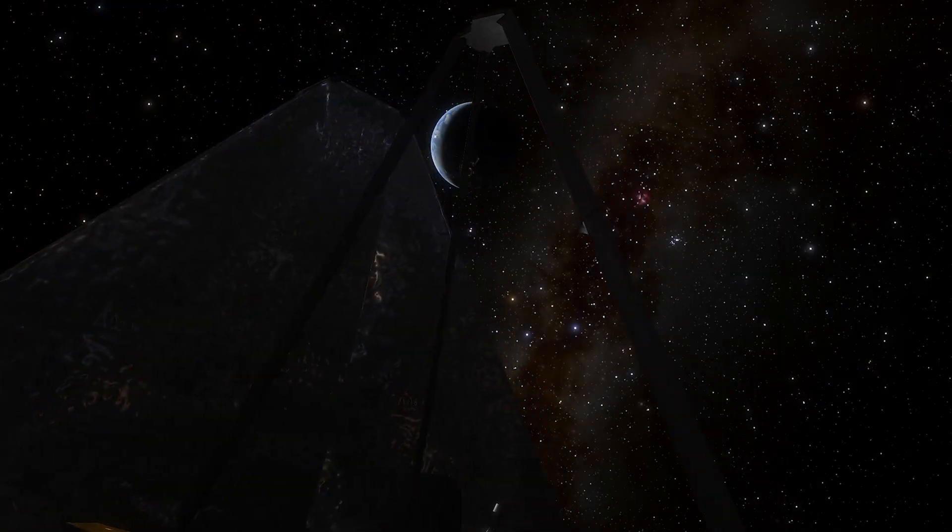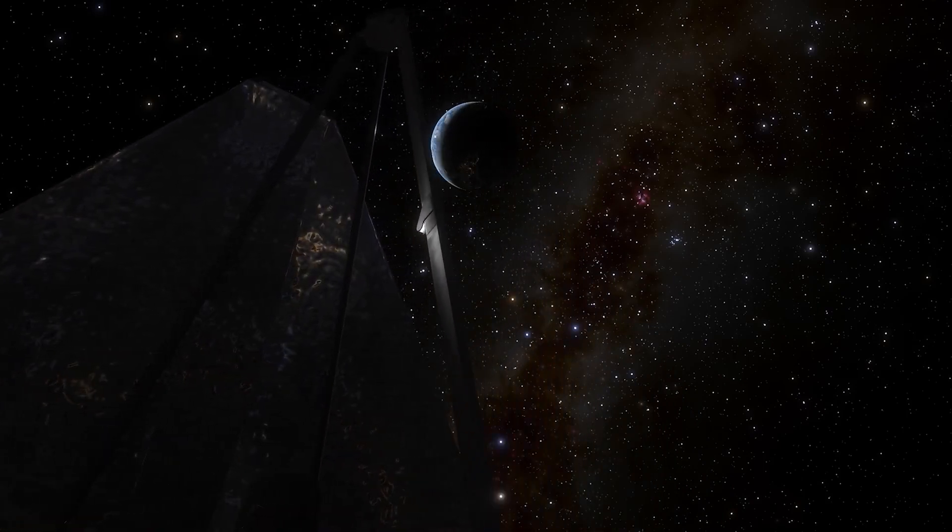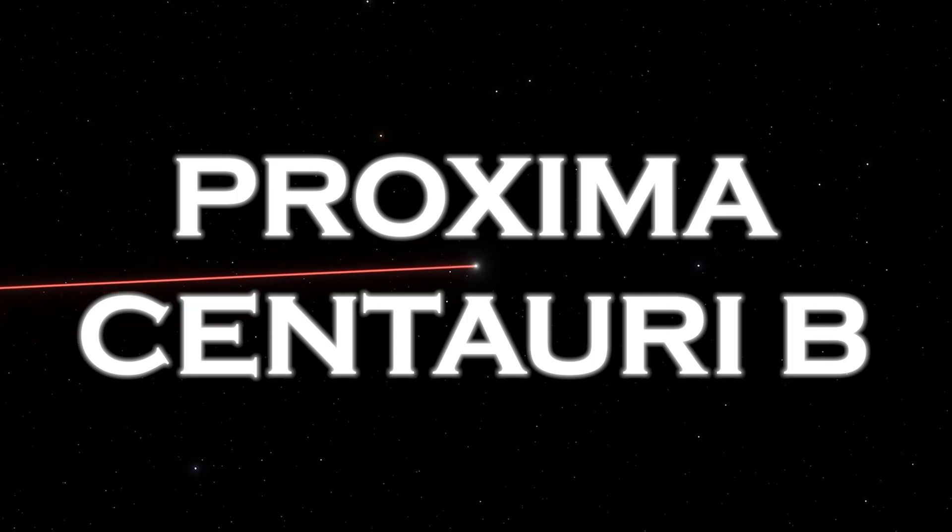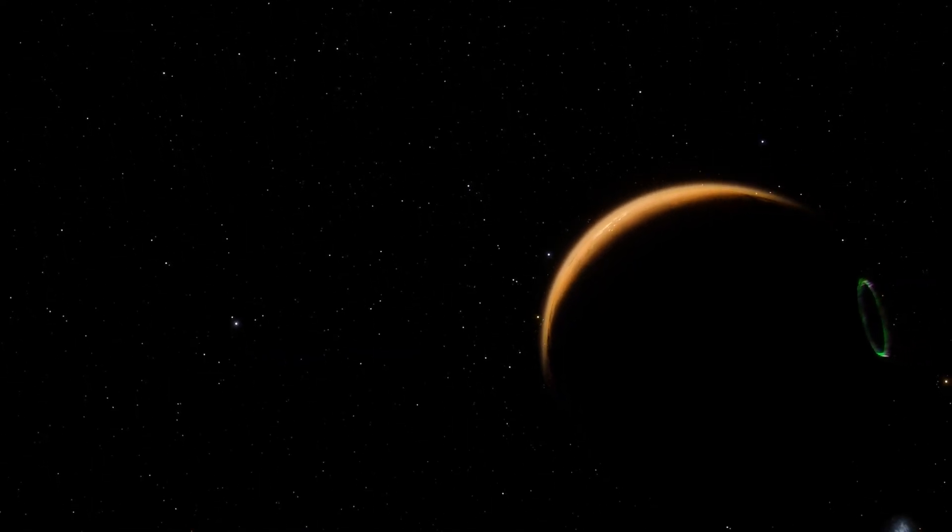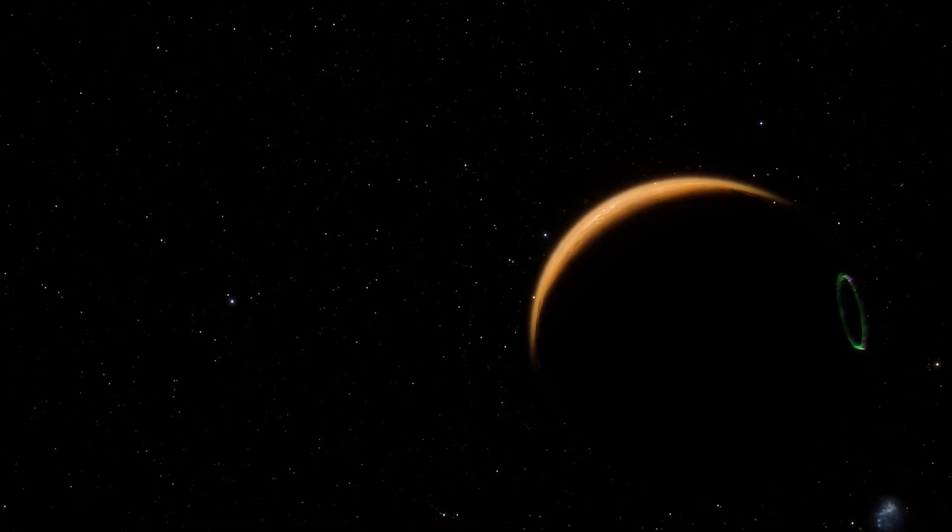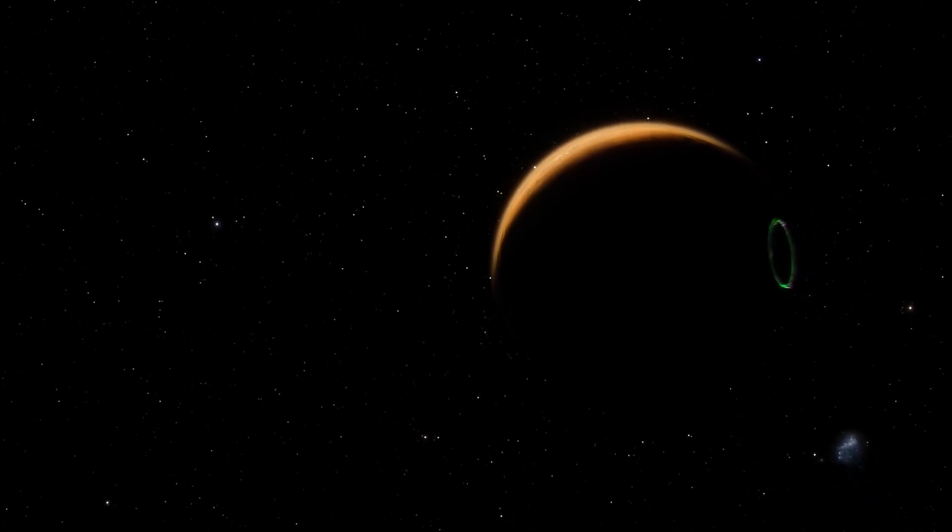While exploring the cosmos and transmitting critical data back to Earth, the telescope observed unique urban lights coming from the exoplanet Proxima Centauri b. These lights, as their name suggests, appear to illuminate a distant city.